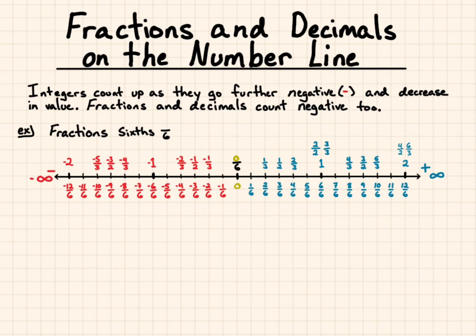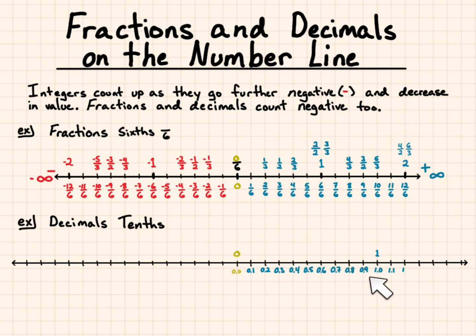Let's look at decimals, and we're going to be talking first about tenths. So we'll create a number line and put 0 in the center. And 0.0 is going to the tenths spot. We'll count up by tenths. 1.0 tenths is just 1, and it'll keep going towards positive infinity.